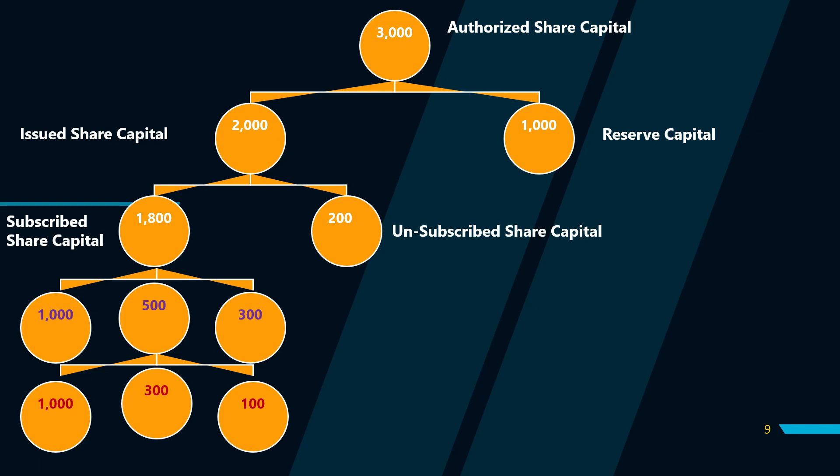Iske baad hai hamari main cheez jo samajhna bahut zyada zaroori hai. Jo paisa hum maangte hain usse bolte hain called up capital — matlab jitna paisa aapne maanga. Aur jo paisa aapko actually mein milta hai — jaise 1500 aur 1300 — usse bolte hain paid up capital. To jitna aap maangte ho logon se usko bolte hain called up capital, aur jo aapko milta hai usko bolte hain paid up capital.